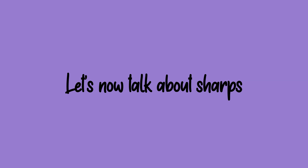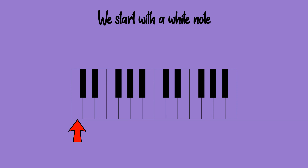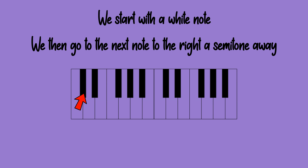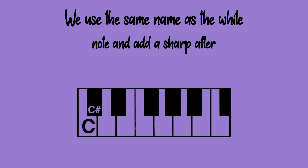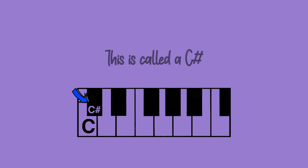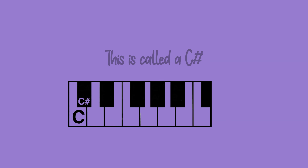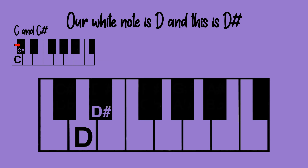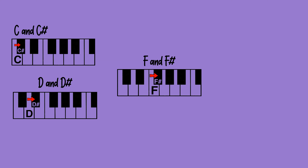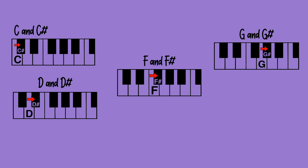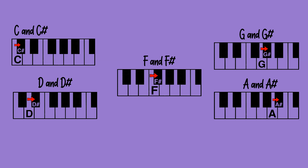Let's now talk about sharps. This is a sharp sign. We start with a white note, then go to the next note to the right, a semitone away. We use the same name as the white note and add a sharp after. This is called a C sharp. Our white note is D, and this is a D sharp; F and F sharp; G and G sharp; and A and A sharp.